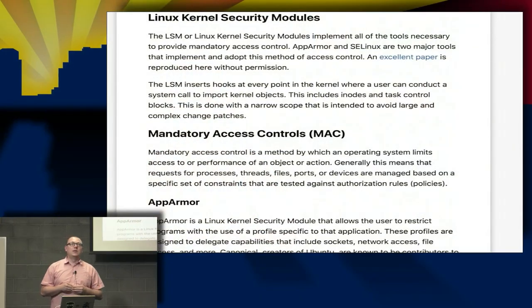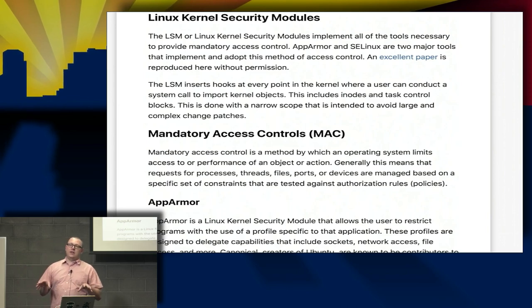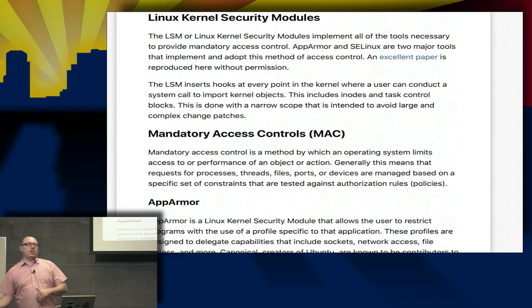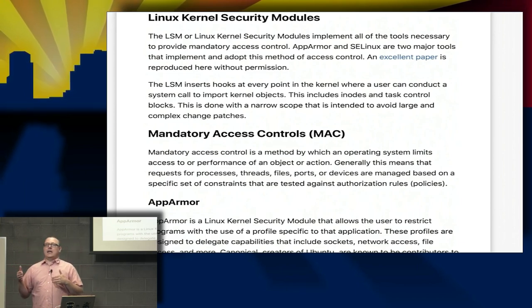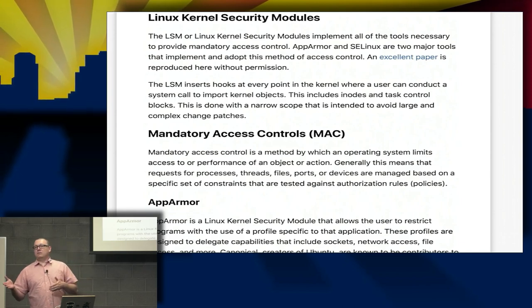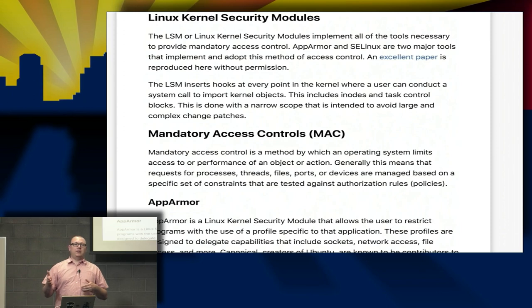Let's talk about the LSM — the Linux kernel security module. The NSA has had a lot of fingers, a lot of people involved in that organization within the kernel. Is anybody able to tell me what the NSA is kind of doing right now? They're trying to implement something into the kernel that people are not very excited about — very weak encryption for IoT.